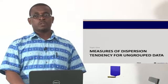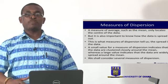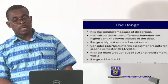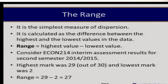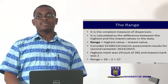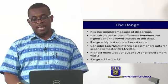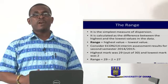Let's begin with measures of dispersion for ungrouped data. We are interested in the spread of the data and not just where it is centered. Our first measure of dispersion is the range — the simplest measure — calculated as the difference between the highest value and the lowest value in the data set. For example, consider the CON2-1 interim assessment results for the second semester of 2014-2015. The highest mark was 29 out of 30 and the lowest mark was 2. Therefore, the range is 29 minus 2, which is 27, indicating a very wide spread in the data set.